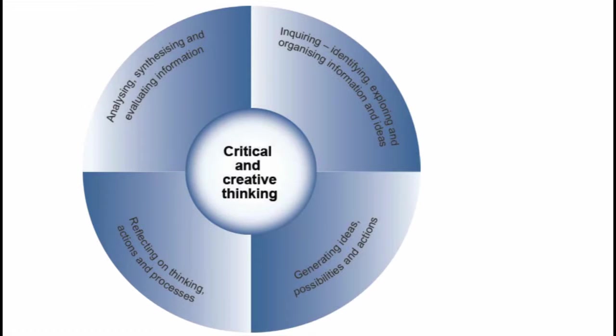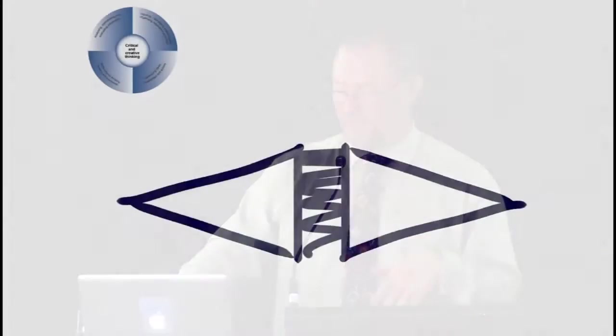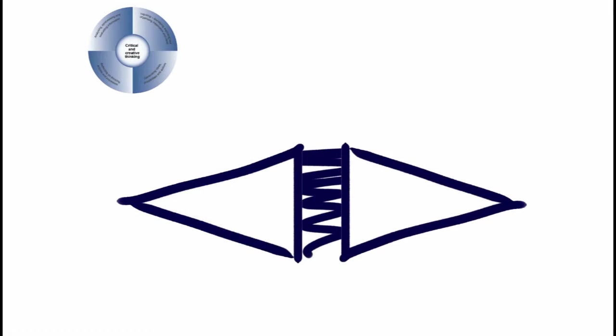Think about where the parallels are because you could do the same sort of process. If you look at critical and creative thinking, the first problem is that the way the general capability talks about creative thinking might be a bit out of date. For decades, we've been talking about creativity as having two parts: something that's novel and appropriate — generating new ideas and testing those ideas. So really, when we think about critical and creative thinking, the whole of it is creative thinking.